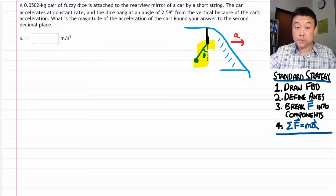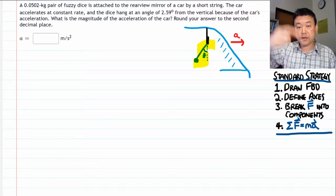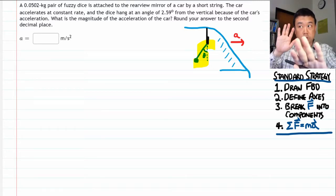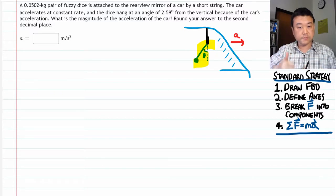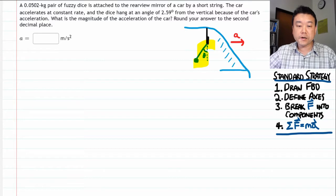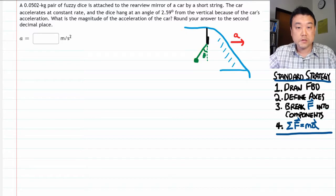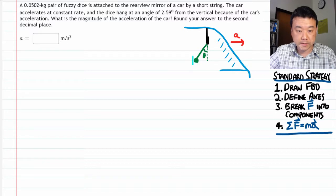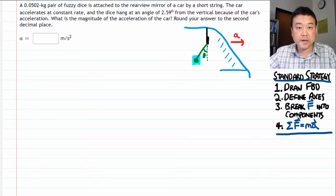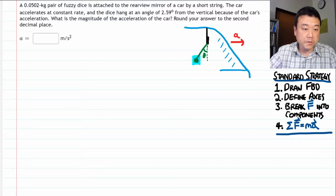So once you have convinced yourself that whatever is hanging in the car will hang backward as the car accelerates forward, then great. Then this is the correct picture to start with, and we are now ready to start following the standard strategy steps. So we have to draw the free body diagram, and it's clear what object we are drawing free body diagram of. The dice that's hanging from the string. So let's draw that.